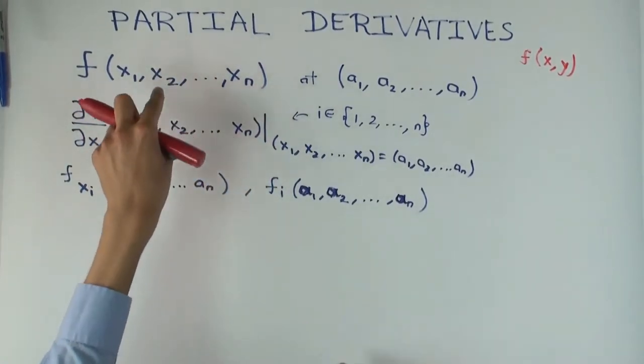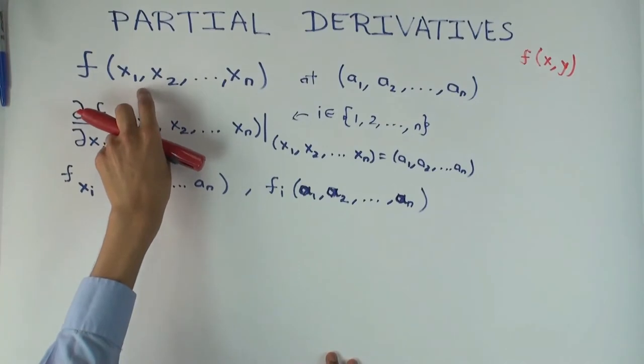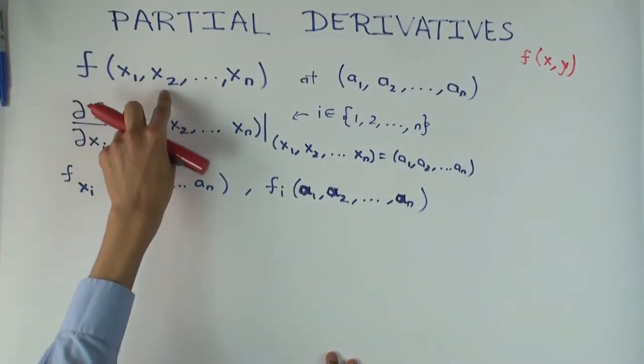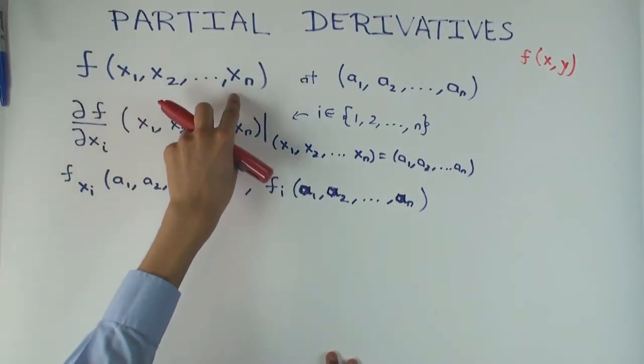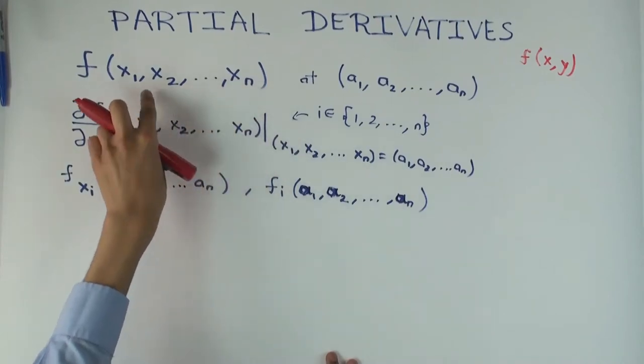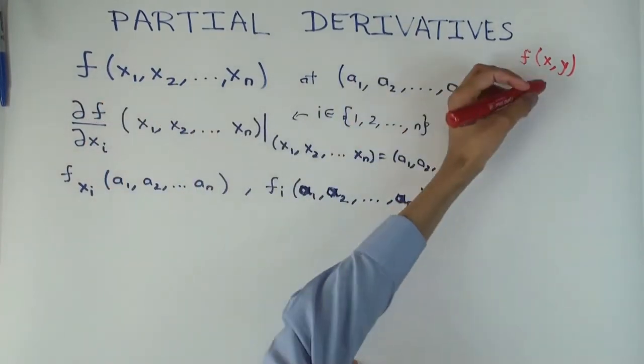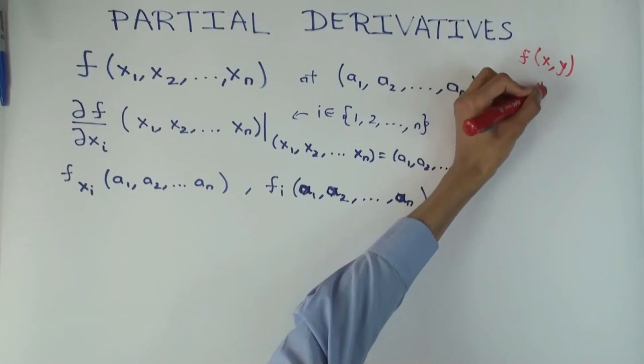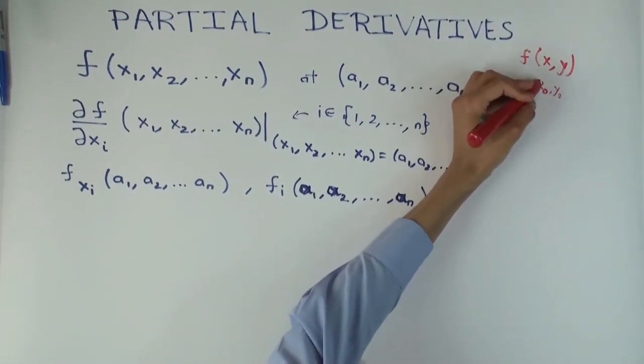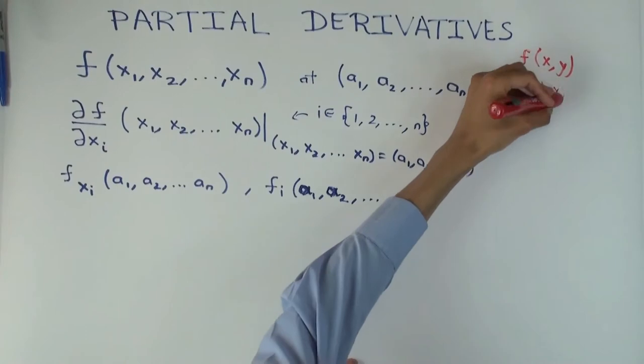So I cannot call them x, y, z, like that. And now because I'm using subscripts, these 1, 2, n to describe the coordinates of the point, I cannot use the subscripts for the actual, like to specify an actual point. So earlier I used this notation for the actual point, now I cannot use that.